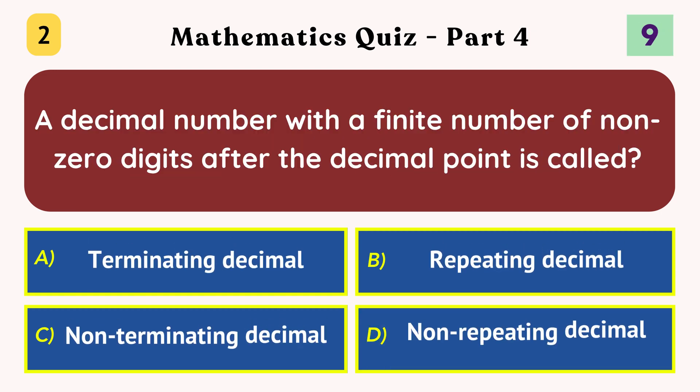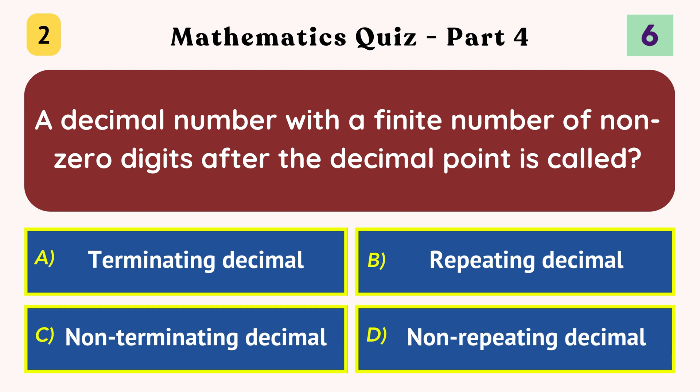A decimal number with a finite number of non-zero digits after the decimal point is called? Terminating decimal.